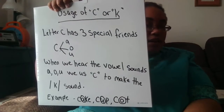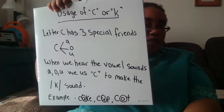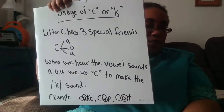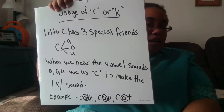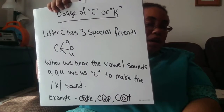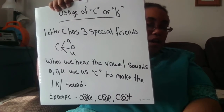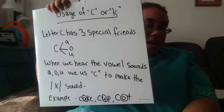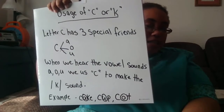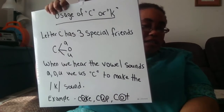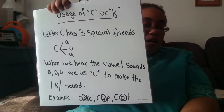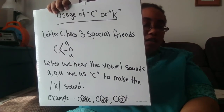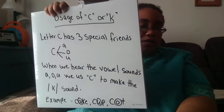Let's look at the vowels in each one of these words. We have A in the first one — cake. U in the second one — cup. And O in the third one — caught. CA, CU, and CO all go together. A, U, and O are C's special partners.